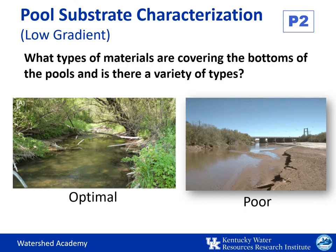In contrast, for low gradient streams, we'll be looking at pool substrate characterization. With these lower gradient streams, we have slower flows and therefore less stream velocity to move larger rocks along the stream bed. This results in more pooled water and allows more aquatic vegetation to grow. We will still want to see a variety of habitat niche types at the bottom of the pool, including a mixture of gravel and sand substrates and abundant aquatic plants and associated root mats. When the stream substrate is all mud and clay or even all bedrock with very little to no vegetation and root mats, scoring for this category is poor.